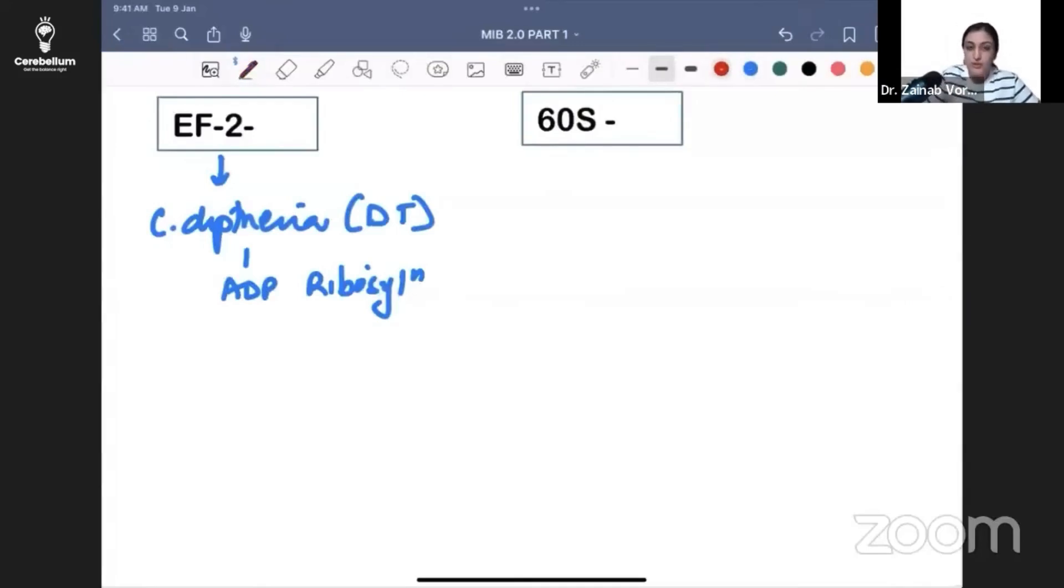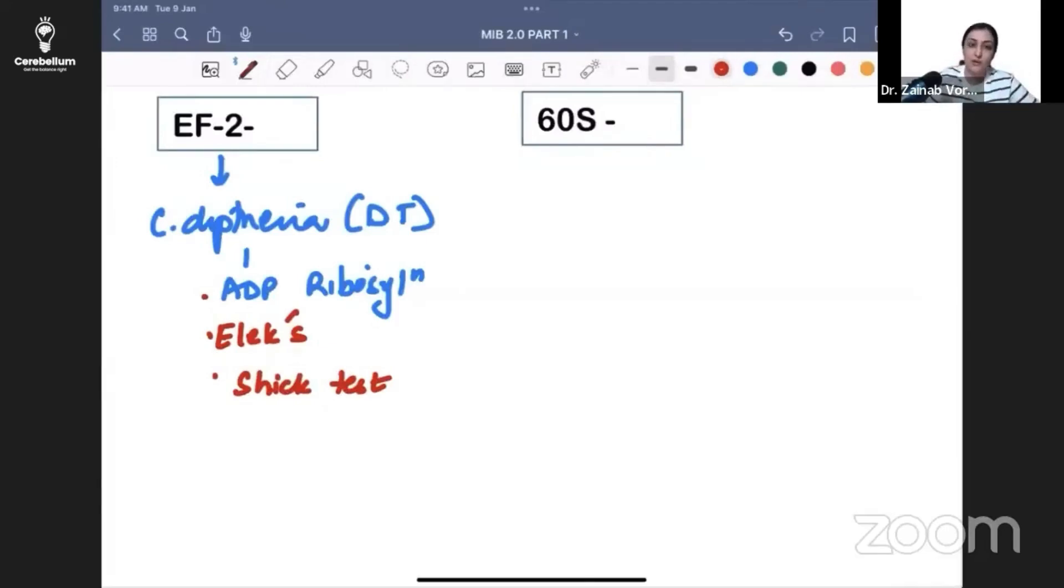Two tests with diphtheria toxin: we have the Elek gel precipitation test. Elek rhymes with Schick, so the Schick test is the skin test. Skin, Schick, Elek - everything goes together. You know the Chinese letter arrangement. What is the stain for Corynebacterium diphtheriae?